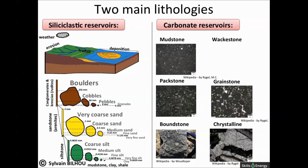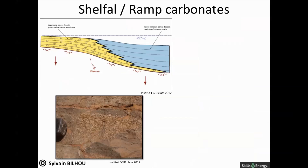As I have done for siliciclastic environments, I will describe the depositional environment from proximal to distal. The petroleum found in the largest and most prolific oil fields in the world, such as Ghawar, occurs within the primary intergranular porosity of shell-fall marine limestones.